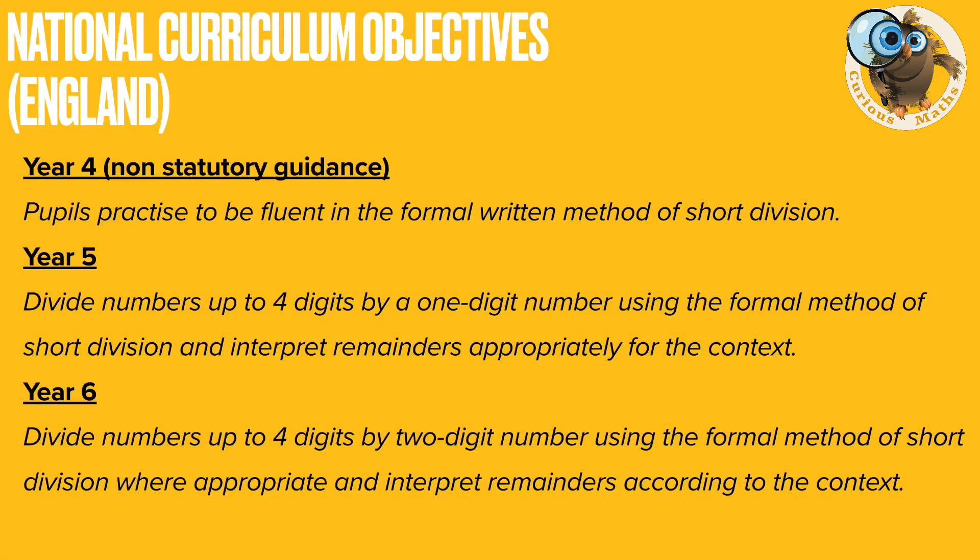Here are the National Curriculum Objectives for teaching short division in England. In Year 4 it isn't actually in the objectives but it is in the non-statutory guidance. In Year 5 they use the formal method by dividing numbers up to four digits by one digit and interpreting remainders appropriately.